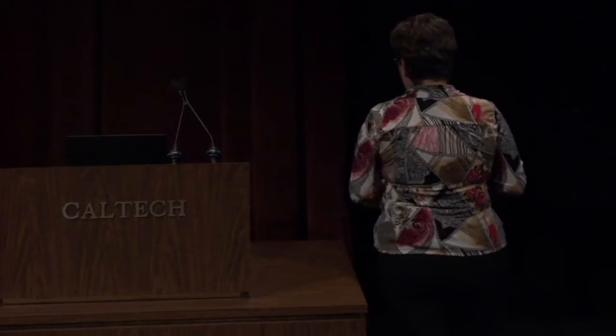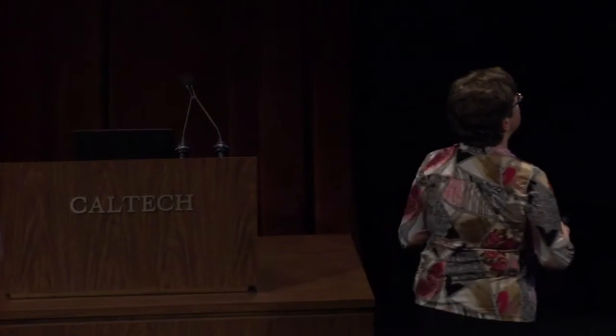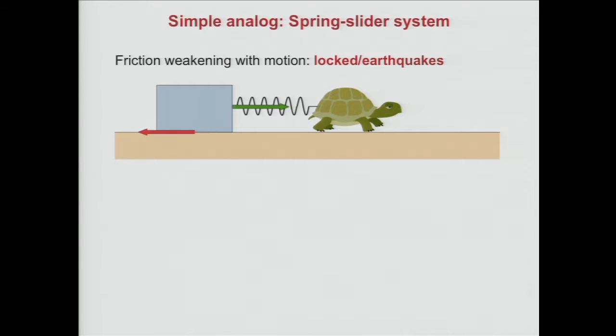The key aspect is that if friction weakens with motion, the mismatch in forces translates into acceleration, and you get earthquakes. First the system stays locked for a while, accumulating forcing, and then it suddenly catches up in earthquakes. So friction weakening with motion is the key feature that creates both locked periods and sudden seismic events.